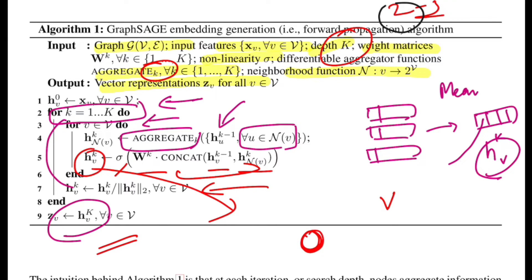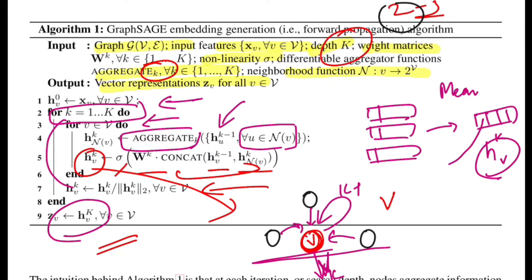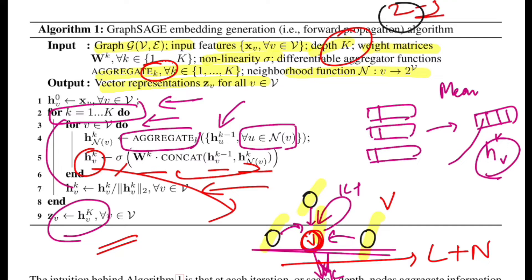Looking at this figure: the central node v has its neighbors — say three of them. The representation at depth k is formed from what the neighboring nodes contribute from their k-1 step embeddings, combined with whatever value v had at step k-1. You apply the aggregator function over the neighborhood representations, concatenate with the node's own representation, then apply linear transformation and non-linearity. The learnable parameters here are the weight matrices W^k, the aggregator function parameters if parameterized, and optionally an additional W that transforms the k-1 representation.